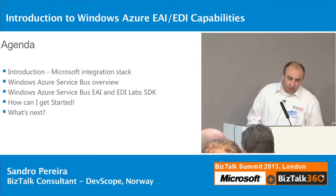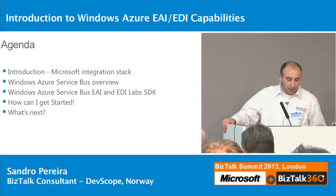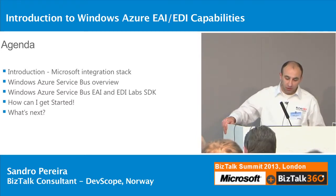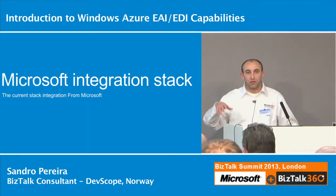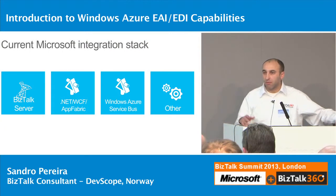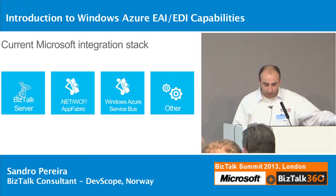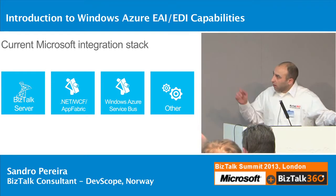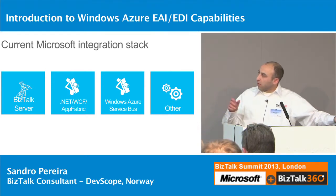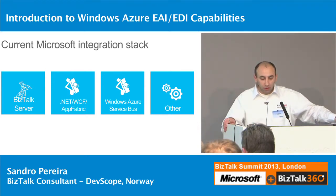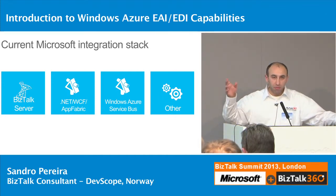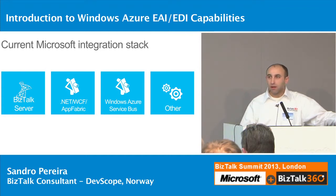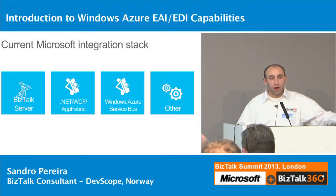So, the Microsoft integration stack — you all know the main product is still BizTalk Server, starting in 2000, every two years a new release. In the next couple of months, there will be a new release from BizTalk Server. In 2004, the product took a revolution, creating new patterns — mapping, content-based routing, publish-subscribe. Now it's mainly new versions and new functionalities.